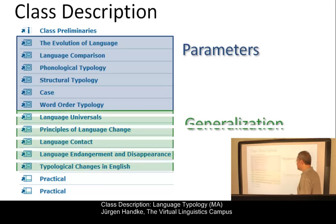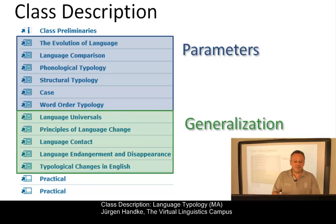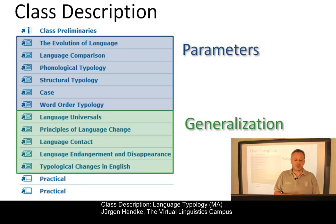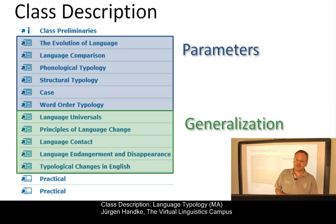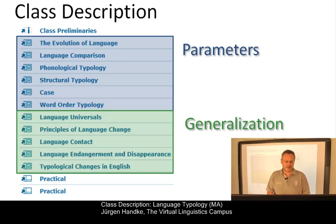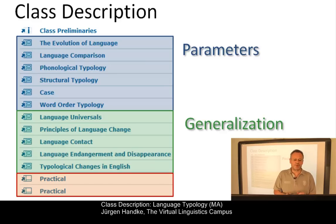The second part of the typology class is devoted to a more general perspective. We will look at languages and language universals and the main principles of language change. We will deal with language endangerment and will eventually investigate the typological changes that the English language underwent. The last two sessions will be used for the analysis projects and their presentation in class.